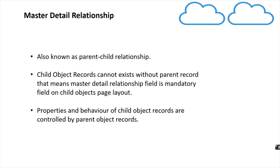The parent would be the school object and the child object would be the student object. We'll create a new field on the student object and link that field to our school object. So school would be parent and student would be child. Child object records will not exist without the parent object record link — the field which creates the relationship between student and school has to be there and it has to be a mandatory field while creating child object records.